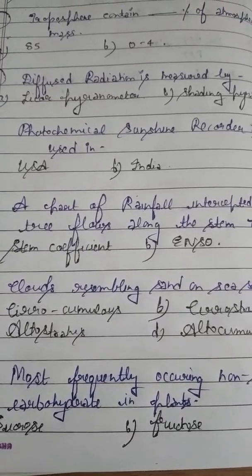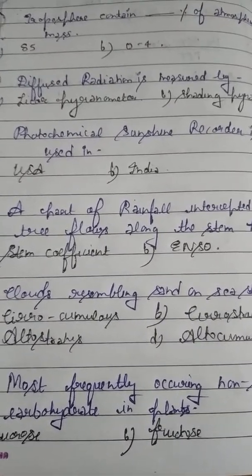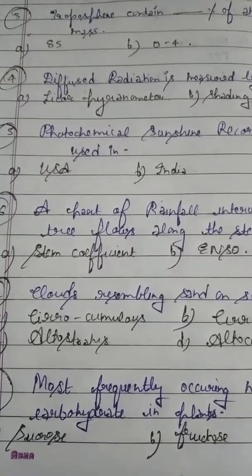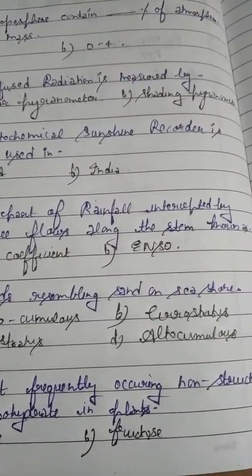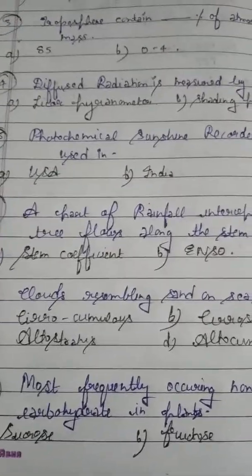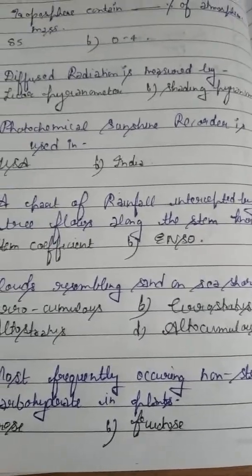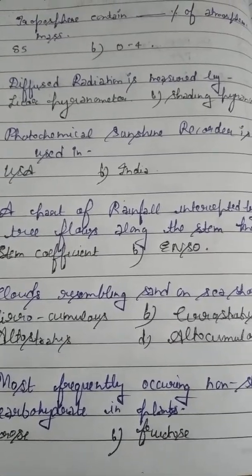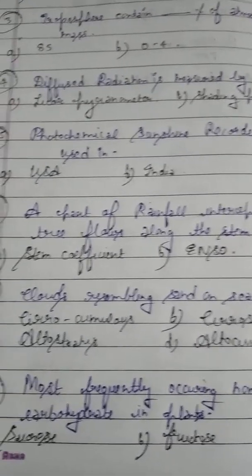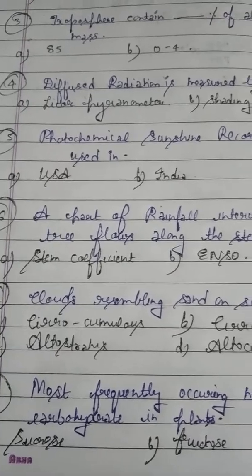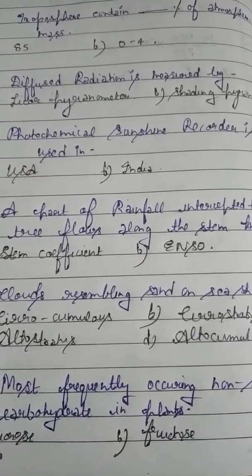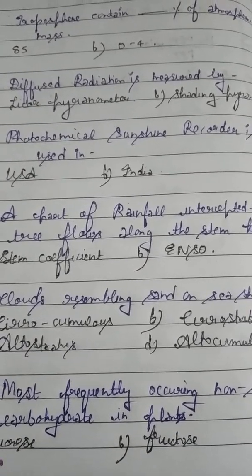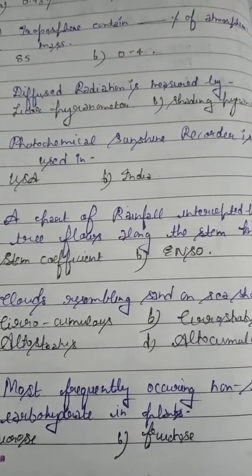Question number 3: Troposphere contains how many percent of atmospheric mass? Option A: 85%. Option B: 0 to 4%. The answer is option A. Note that 0 to 4% is the mass of water vapor in the atmosphere, while the troposphere contains 85% of the atmospheric mass. Please students, remember it.